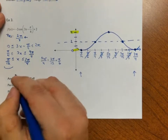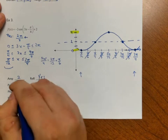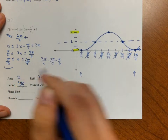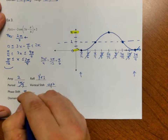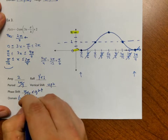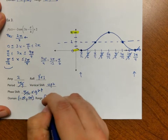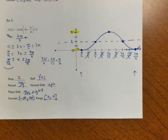We've done all the analysis as we've worked through this. The range is from 0 to 4. I hope this has helped, and remember to ask your questions when we meet next.